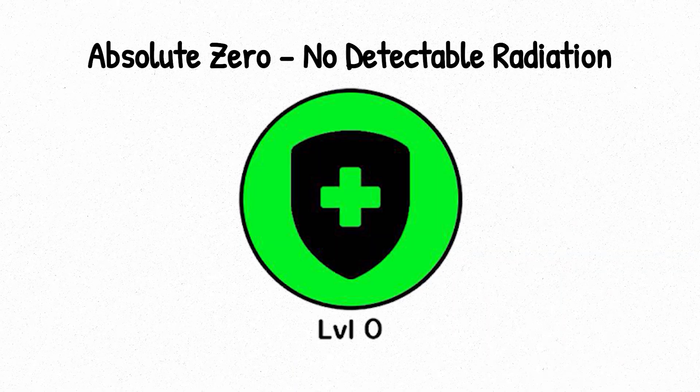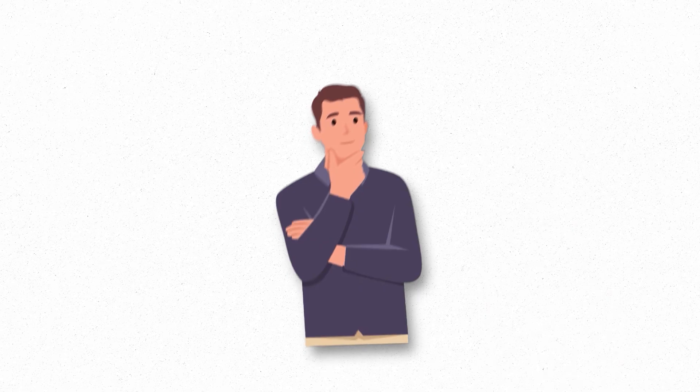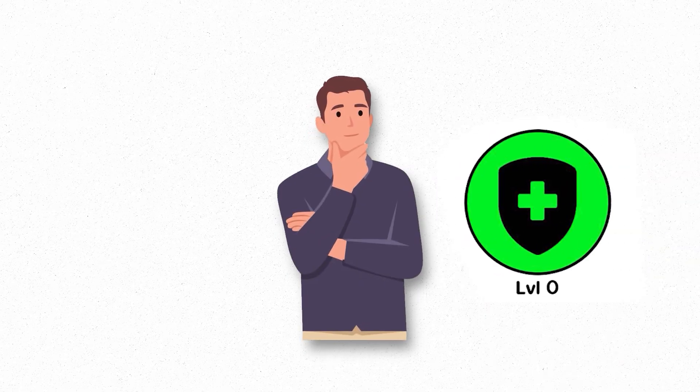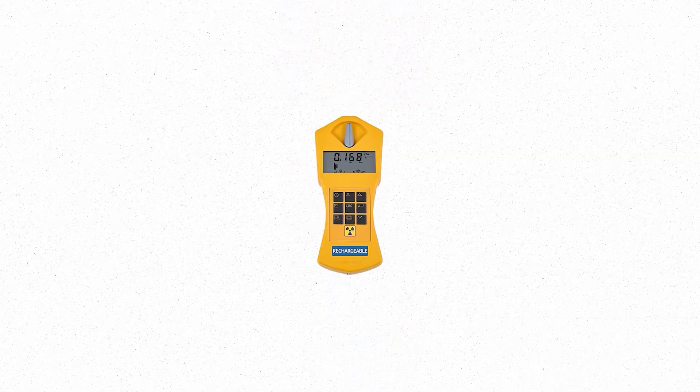Level 0. Absolute 0. No detectable radiation. This is the baseline. Theoretically, level 0 represents a state of complete radiation absence. No ionizing particles, no background noise, not even the faintest blip on a Geiger counter.